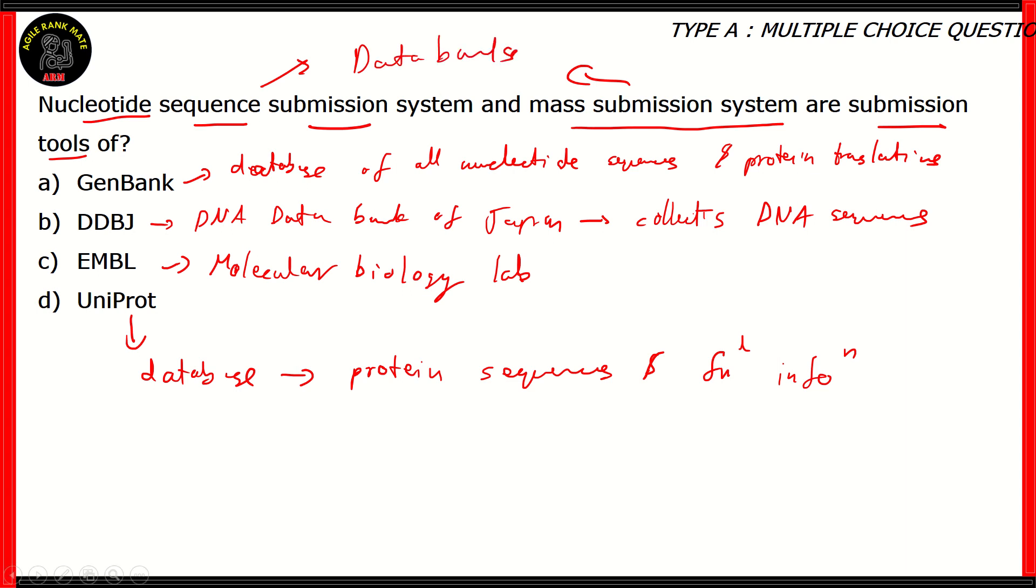Even though GenBank deals with nucleotides, option A turns out to be incorrect because it's a database from which you take data. Uniprot, also the same thing, and it's also working on protein sequences and not DNA. EMBL is a molecular biology lab where research is done, so option C is incorrect. The right answer is option B, the DNA databank of Japan. This is the databank which collects DNA sequences and which has the submission tools known as nucleotide sequence submission system and mass submission system.